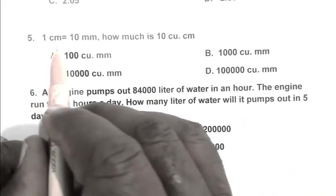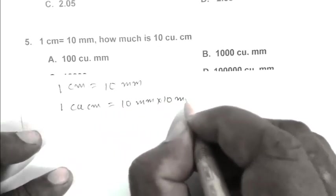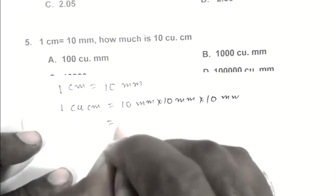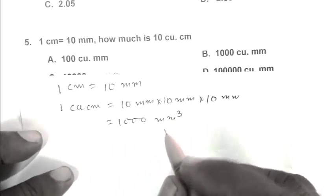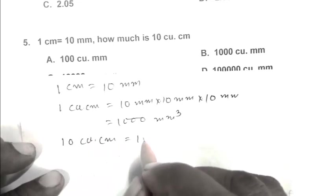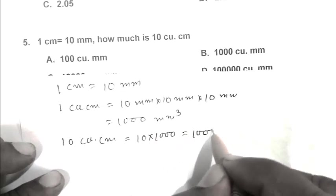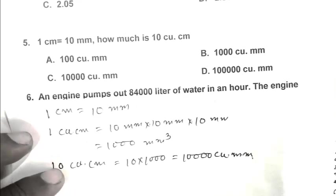Question number 5. 1 cm equals 10 mm. How much is 10 cubic cm? 1 cm equals 10 mm, so 1 cubic cm equals 10 mm times 10 mm times 10 mm, which equals 1000 cubic mm. Therefore, 10 cubic cm equals 10,000 cubic mm. C is the right answer.